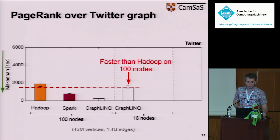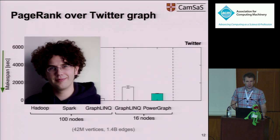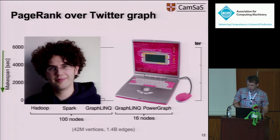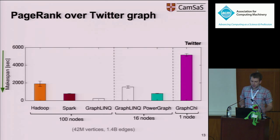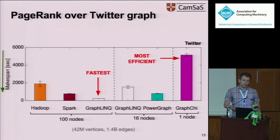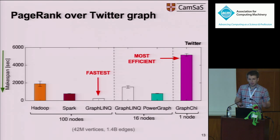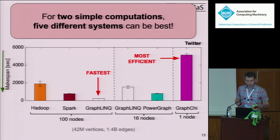Kermit also tried a graph-specific system and ran the computation in PowerGraph. He discovered that at this scale, PowerGraph outperforms GraphLink. He also heard of Frank McSherry and his laptop, and ran the computation on a single machine using GraphG — it works quite well. After these experiments, Kermit concluded that GraphLink is the fastest if you can throw resources at it, and GraphG is the most resource efficient. However, for just two simple queries, five different systems can be best, and Kermit is confused.